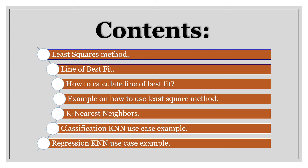The points I am going to cover in this presentation are: first, I will explain what the least square method is. Then, I will explain what is line of best fit and how to calculate it. Then, I will explain an example on how to use least square method. And then, I will move on and explain KNN or K-nearest neighbor algorithm. I will end this presentation with an example of classification KNN and regression KNN.